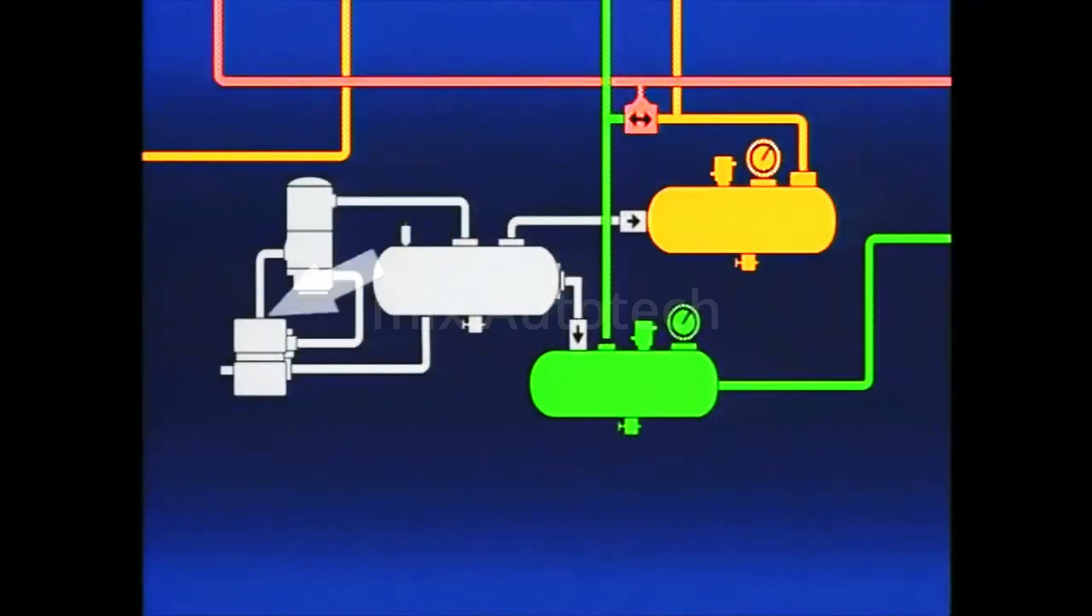The air dryer is installed in the discharge line between the compressor and the supply reservoir, and also interacts with the governor.